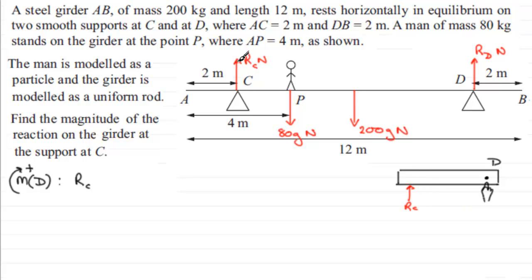So the moment, remember, is the force times the perpendicular distance back to where we're taking moments about. So it's going to be RC, the force, multiplied by this distance across here. So what is that distance going to be? Well, you've got 2 meters here, you've got 2 meters off the end here, so that means that this distance in here, because the whole length is 12 meters, must be 8 meters. So we've got RC times 8.